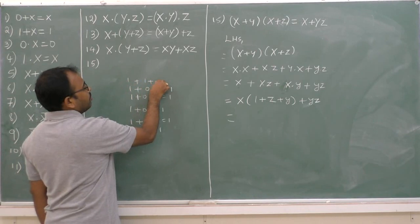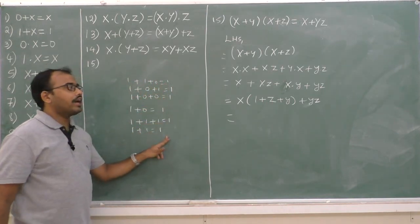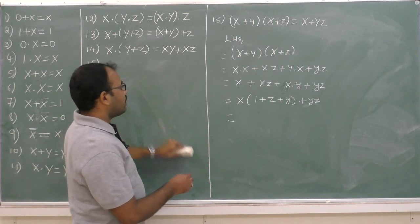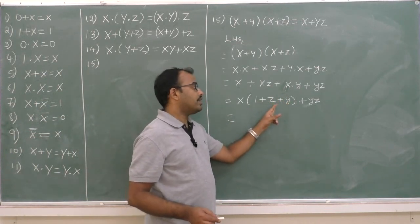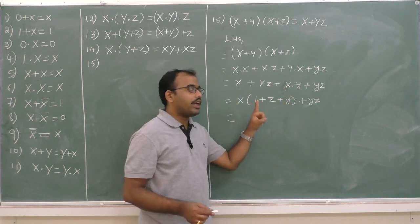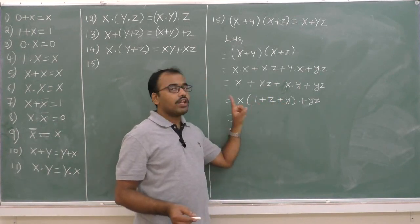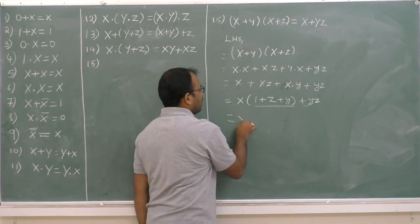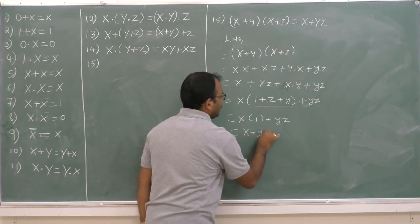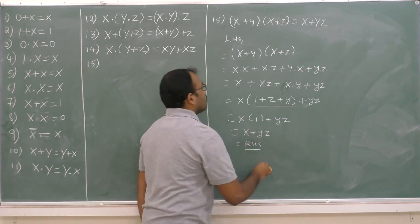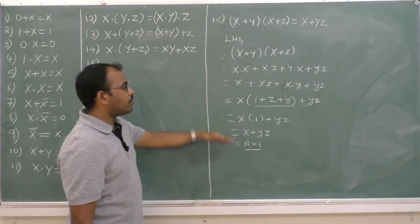And 1 plus 1 plus 0 is equal to 1. That means z may be 0 or 1, likewise y may be 0 or 1; we are adding that value to 1, and we will get 1 itself. Therefore, overall this expression's value is 1 plus yz. And now 1 into x is x, so we get x plus yz, which is equal to RHS. We have proved that value.